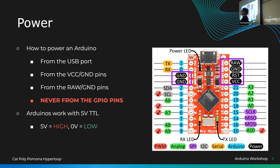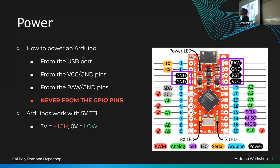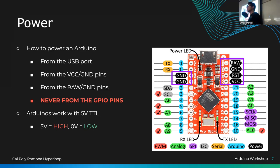Anything in between 0 and 5 volts is a gray area — it's unpredictable whether the pin reads HIGH or LOW. This is especially important for inputs: if a sensor gives you 3 volts, the Arduino won't reliably interpret it as HIGH or LOW. So for beginners: 5 volts is HIGH, 0 volts is LOW. I color-code them red and green, since that's what a voltage probe typically shows.